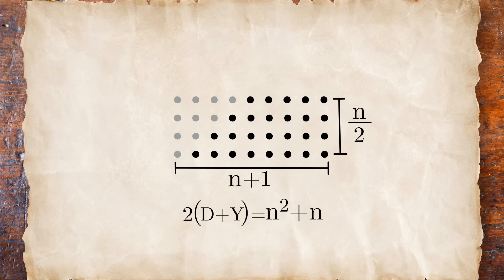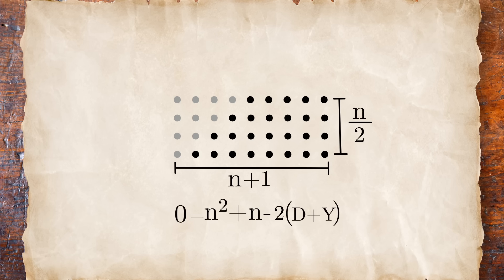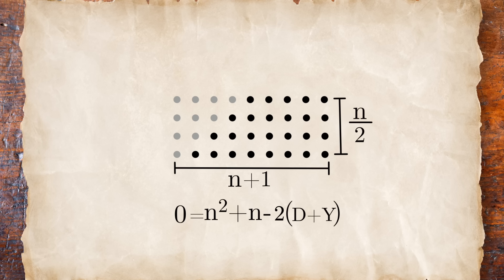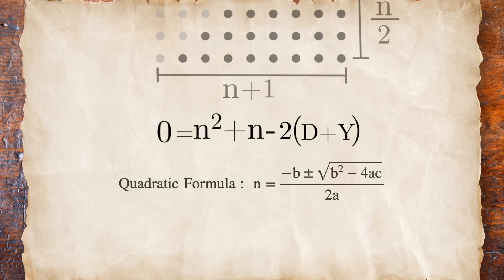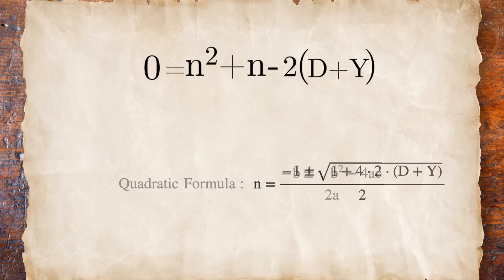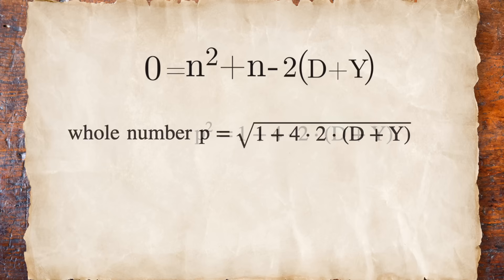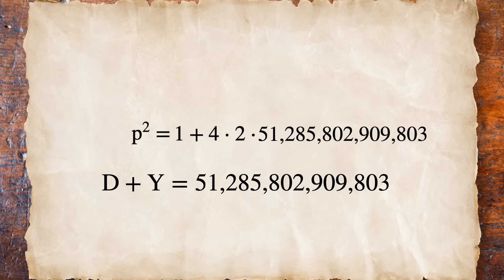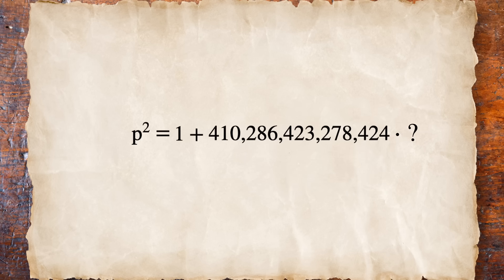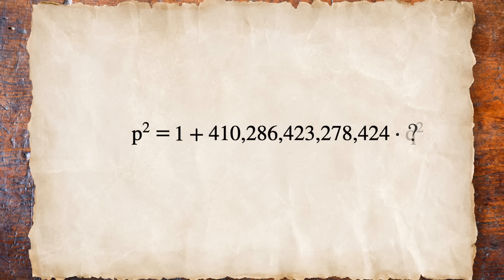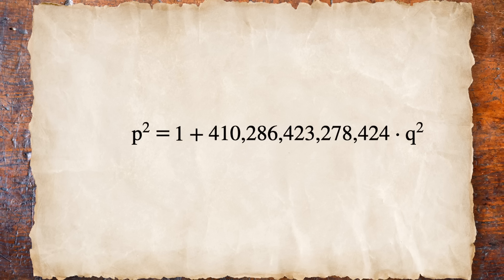The key to making our number of yellow and dappled bulls into a triangular number is going to be to find a value that fits everything we did before and gives us a whole number solution to this equation. Since this is a quadratic equation, we can solve it using the quadratic formula. We know that we'll get a whole number answer whenever this part under the square root sign, what's known as the discriminant, is a perfect square. So now, our job is to find a multiple that lets us scale up the number of dappled and yellow bulls so that this equation works. Since we don't want to mess up our perfect square from the last part, this new multiple also needs to be a perfect square.